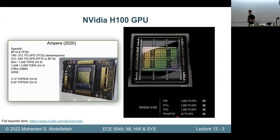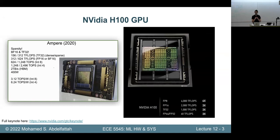A big focus of the talk was also how to scale these GPUs — how to connect many of them in a rack, then a cluster, then supercomputer scale. They really focused on NVLink, and that's very relevant to today's lecture, because when you're training a model using multiple GPUs you do need a lot of communication bandwidth. If you're interested, I'd highly recommend watching the keynote.